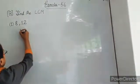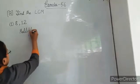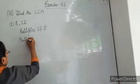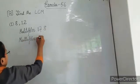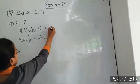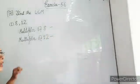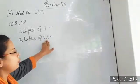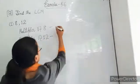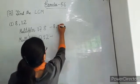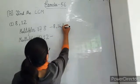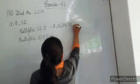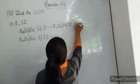So right here, multiples of 8 and then multiples of 12. Multiples means the number which is divisible by 8, and the number which is divisible by 12. Starting with 8: 8, 16, 24, 32, 40.